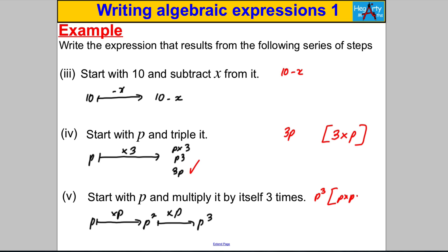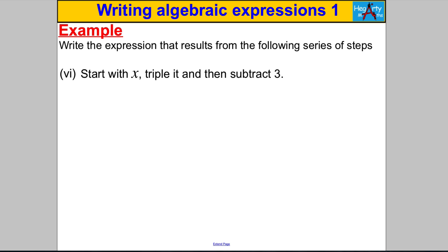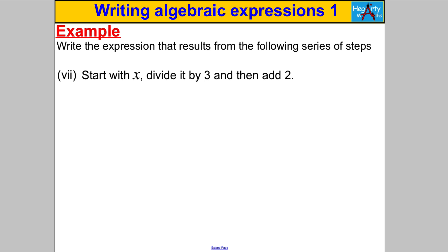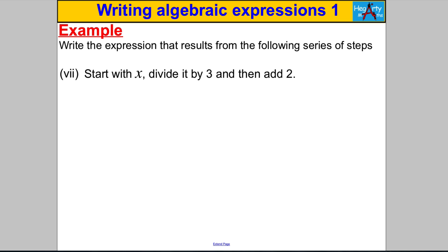Next: start with X, triple it, and subtract 3. You multiply X by 3 to get 3X, then subtract 3, giving the expression 3X subtract 3. Final example: start with X, divide it by 3 — a mathematician writes that as X over 3 — then add 2, giving X over 3 add 2. And that's all for this introduction to algebra and how to write simple expressions. Thanks for watching.